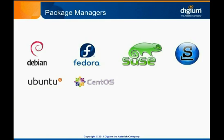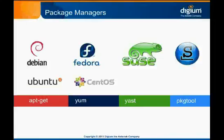Asterisk may require dozens of different software packages to be loaded on the system before it can be installed. While it's possible to manually install each individual package, this is often time-consuming and inefficient. Fortunately, there is an easier way to do this. Most modern Linux distributions come with a powerful tool called a package manager — a simple one-stop shop for downloading and installing software packages. For the most part, you'll want to use the package manager that comes with the Linux distribution you're using.